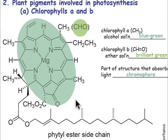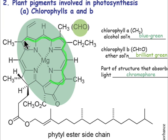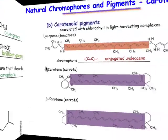We've already seen the structure of chlorophyll, and you can notice that there's an extended pi-delocalization of contiguous sp2 hybridized carbon and nitrogen around the ring of this molecule.